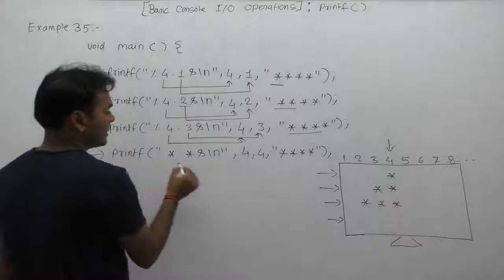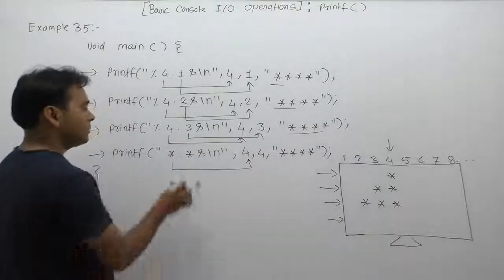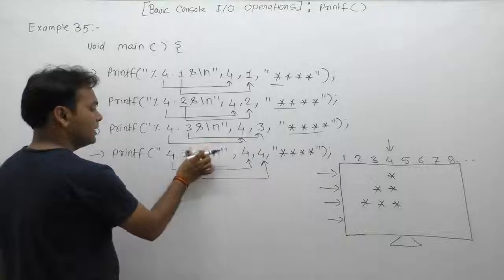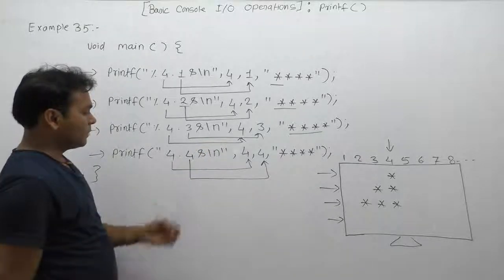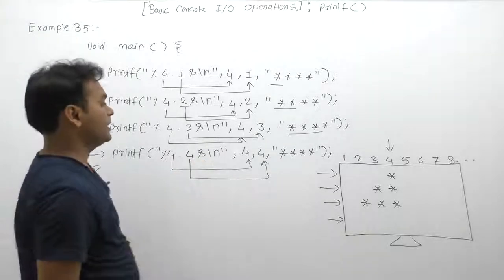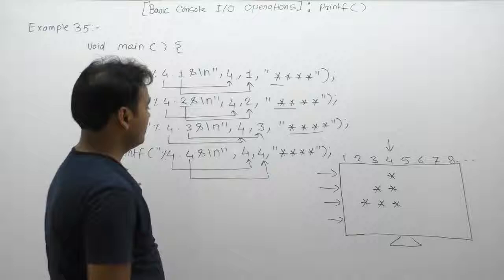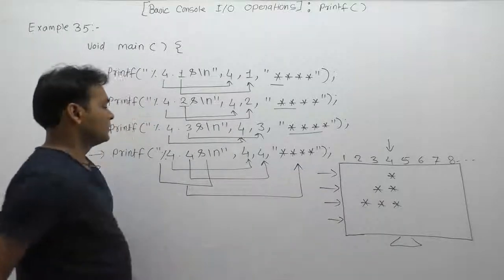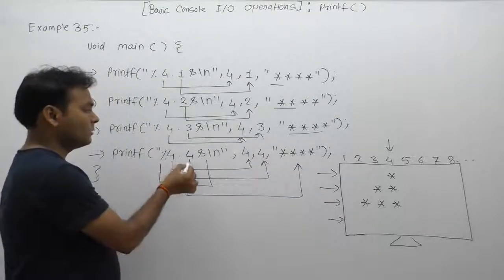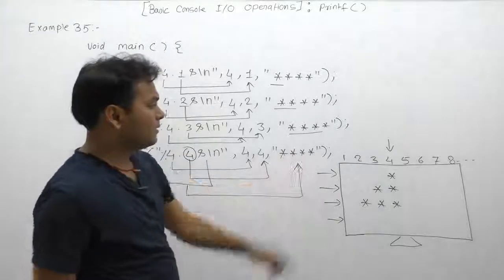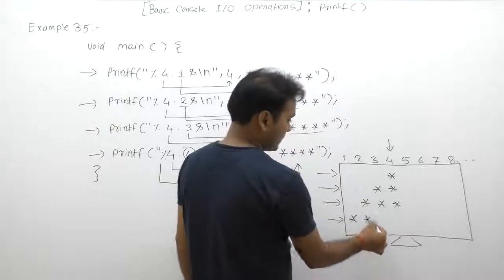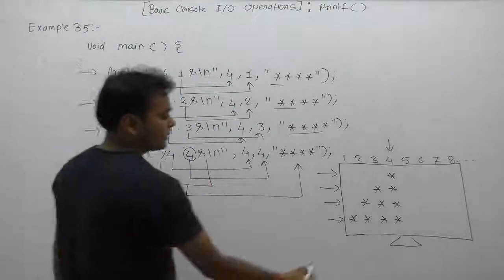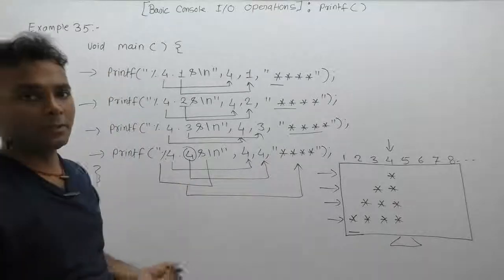Next, the first star is substituted by the first parameter value as four, and the second asterisk is substituted by the second parameter also as four — it becomes like percent four point four s backslash-n. The same string is again displayed; this format specifier is applied to the given string, which is displayed in a field of four width. Since the precision is four and there are four characters, all four characters are displayed — so the displayed message is four asterisks. According to backslash-n, the cursor is shifted to the next line. This is the behavior of the current printf function.